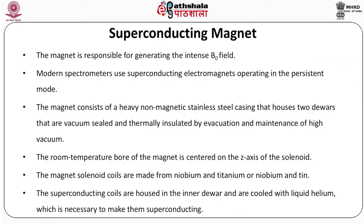Superconducting magnet. The magnet is responsible for generating the intense B0 field. Modern spectrometers use superconducting electromagnets operating in the persistent mode. The magnet consists of a heavy non-magnetic stainless steel casing that houses two divars that are vacuum sealed and thermally insulated by evacuation and maintenance of high vacuum. The room temperature bore of the magnet is centered on the z-axis of the solenoid coils. The magnet solenoid coils are made from niobium and titanium or niobium and tin. The superconducting coils are housed in the inner divar and are cooled with liquid helium to make them superconducting.